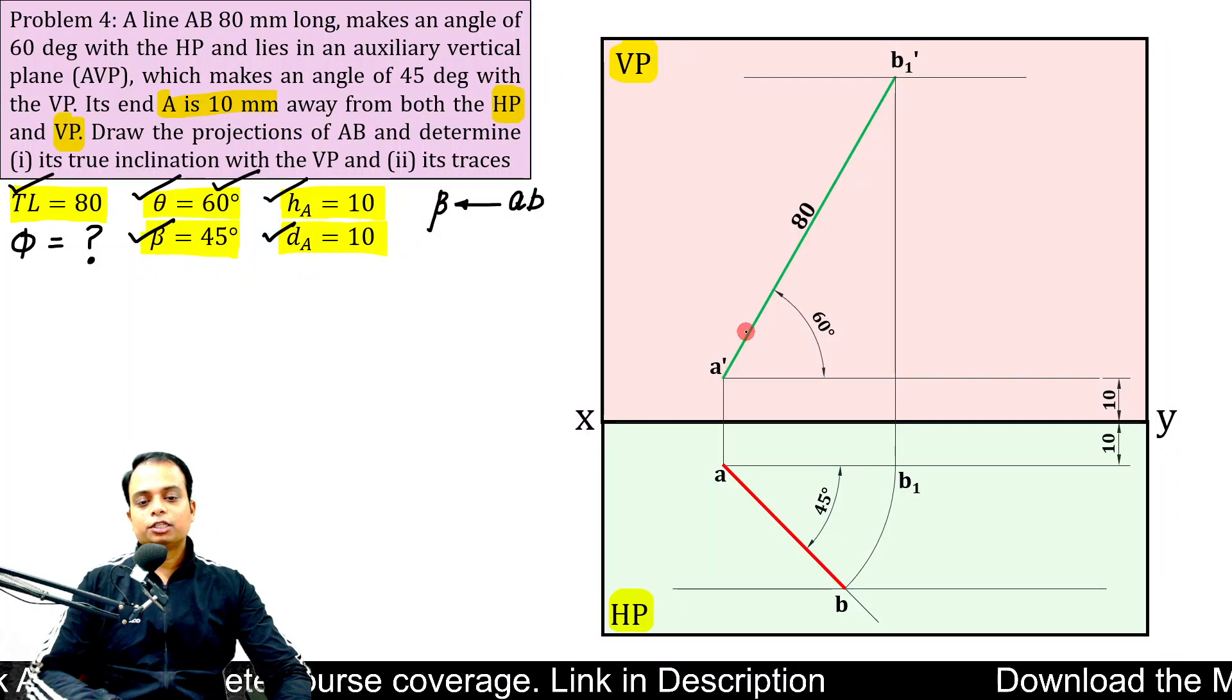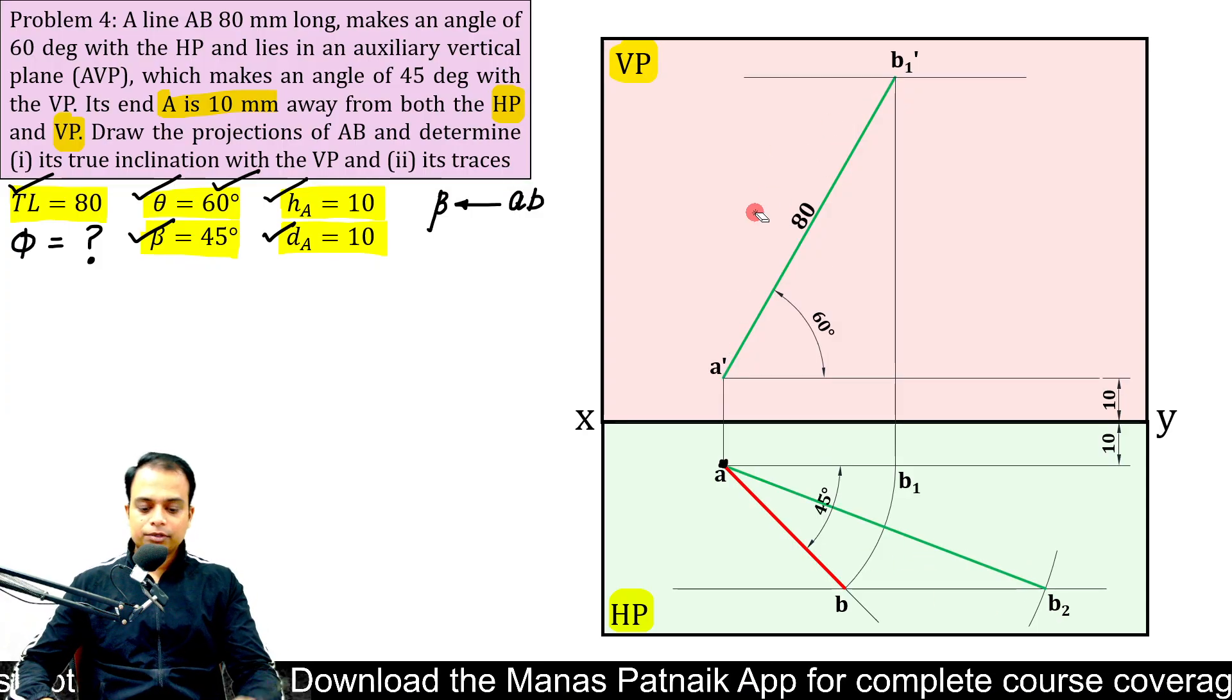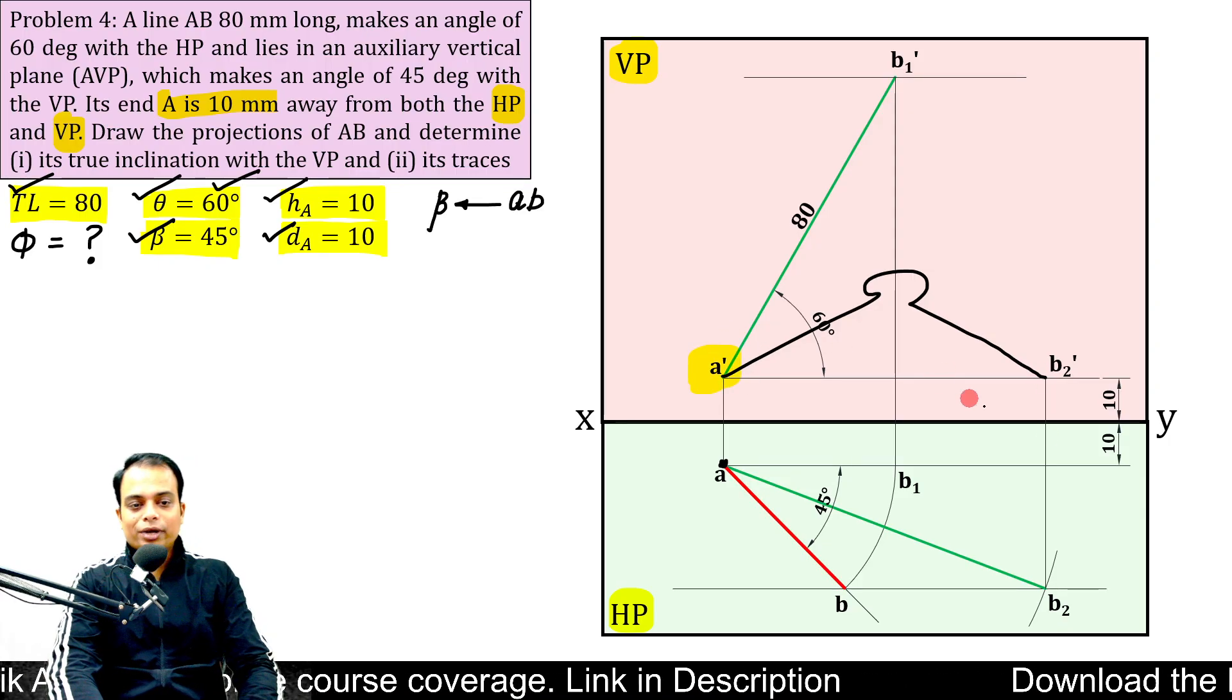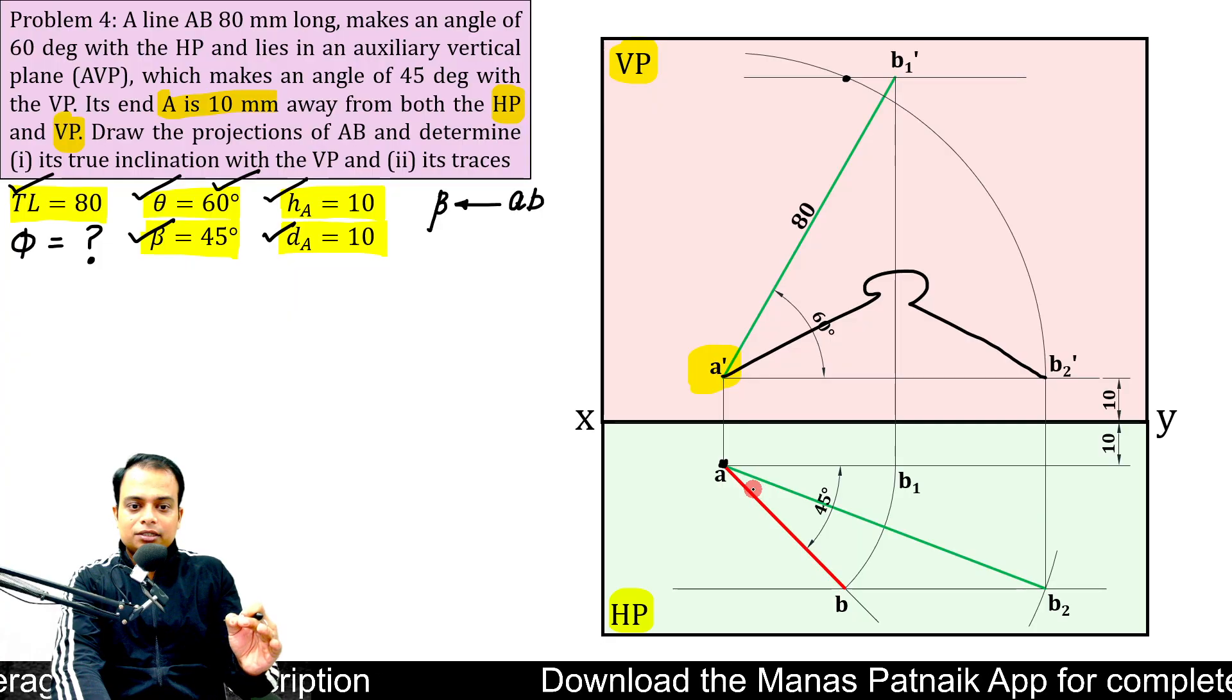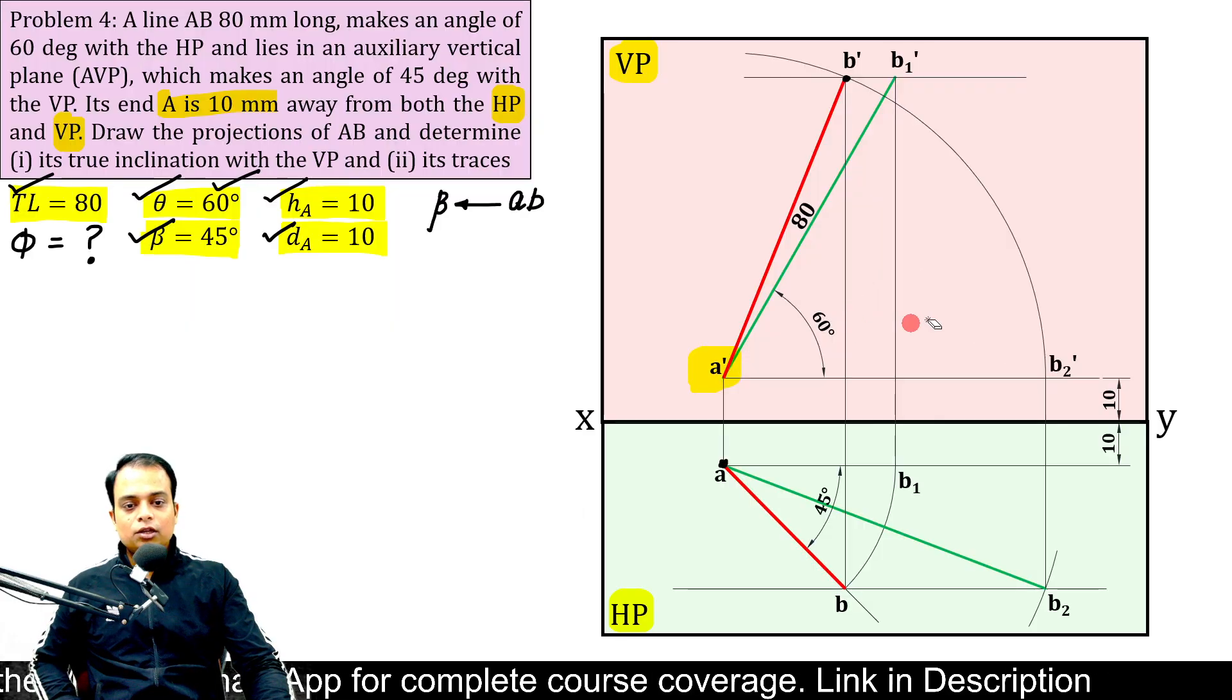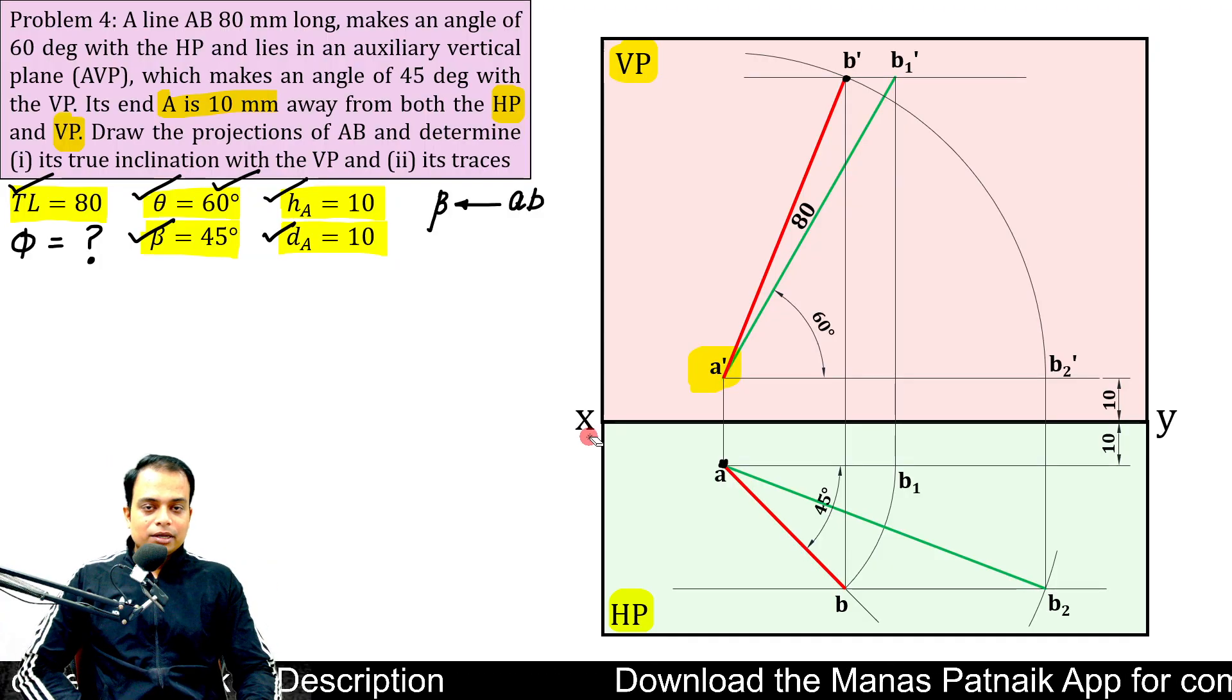Another way of approaching this problem is, keep one leg of your compass at A dash, other leg at B1 dash, with that 80 millimeters as true length, with A as center cut an arc, this is your true length. Now, you can simply take this B2 upwards. This is going to be B2 dash. And with A dash B2 dash as the radius and with A dash as the center, you have to rotate it in the anticlockwise sense until it intersects this locus of B in front view. This intersection point is point B dash. Connect B dash with A dash. That is your final front view. So, to be very honest, the projections are complete. However, in this problem, we have to go for traces also.